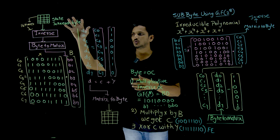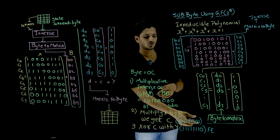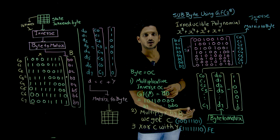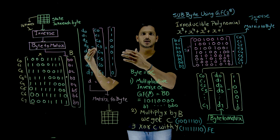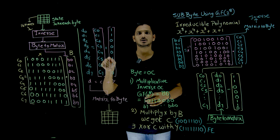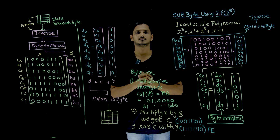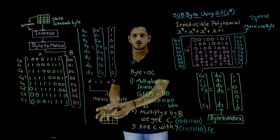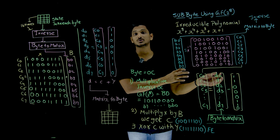This is how we do in encryption. This is one byte — you convert it into FE. Take the second byte and convert it. Take the third byte and convert it. Like this, this process executes for 16 times. After that, the output will be going to the decryption side.